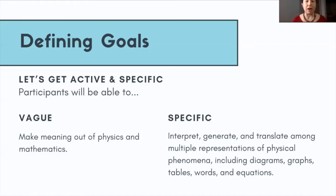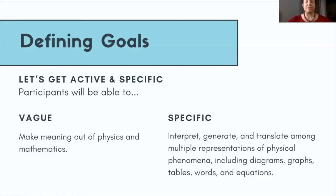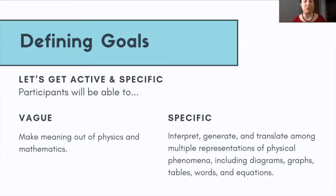We'll put you into breakout rooms to get very specific in terms of: 'Participants will be able to do what after your workshop that they struggled with before?' When I first think about this for my course, I think 'I want students to make meaning out of physics and mathematics' — but that's very big. Or 'I want them to communicate better.' These are glorious but vague goals. A more specific version: interpret, generate, and translate among multiple representations — graphs, equations, words — of phenomena in the physical world.